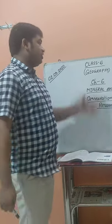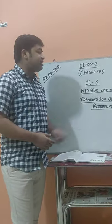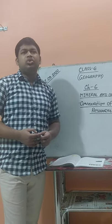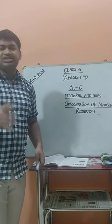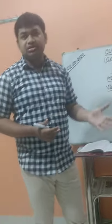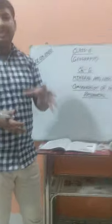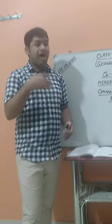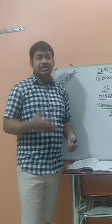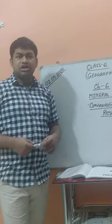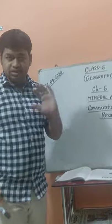Hi guys, today we will tell you about chapter 6 — about the minerals and ores. You already know so many things from this chapter related to metals: what are minerals, what is ore, what is metal, non-metal, ferrous, non-ferrous, and different types of metals, their uses, where they are found, sources in India and the world, and non-metallic minerals. So many things that we already discussed.